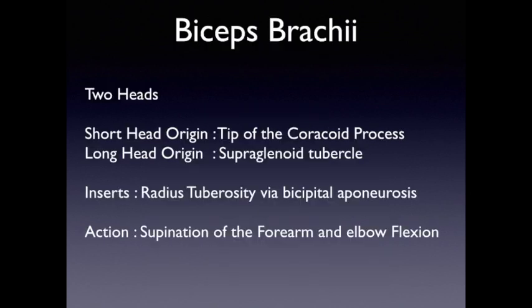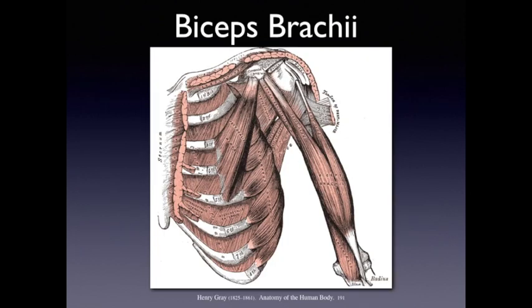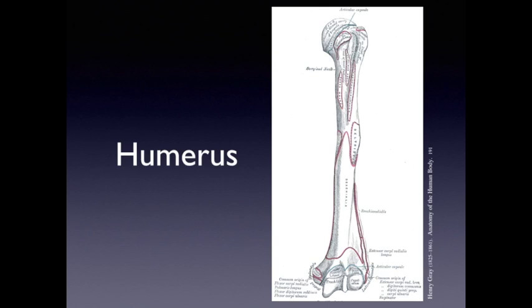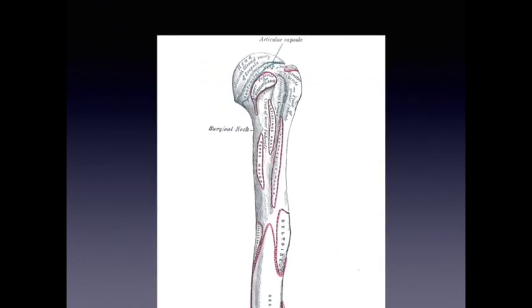The biceps tendon — as a refresher, the biceps has two heads. One starts at the coracoid process and the other originates at the supraglenoid tubercle. They insert at the radial tuberosity of the radius, and their action is to help in supination of the forearm and to assist with elbow flexion. This is an image from Grey's Anatomy.